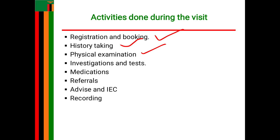Under general examination, the first thing you look at is the general appearance of the woman — her grooming and external presentation. You look at the impression of her physical and mental well-being, whether she is mentally stable, and her stature, since a small-bodied woman may have a small pelvis. You also look at her gait.